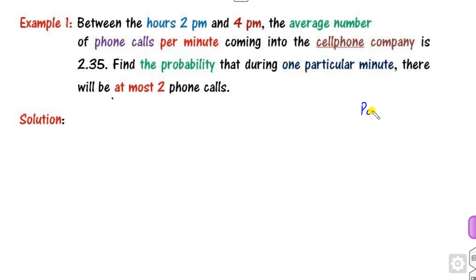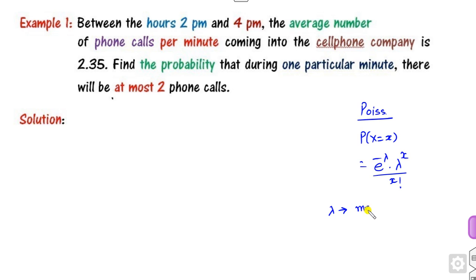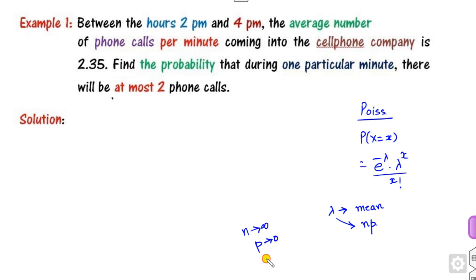The PDF of the Poisson distribution is e raised to the power minus lambda, multiplied by lambda to the power x, divided by x factorial, where lambda is the mean. If the mean is given directly you can use it; otherwise you can use lambda = np, where n approaches infinity and p is very small, so the product is a finite value.